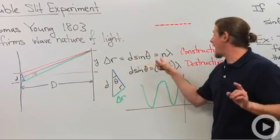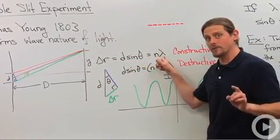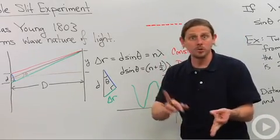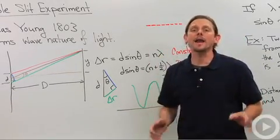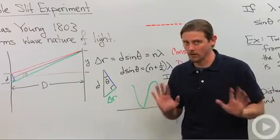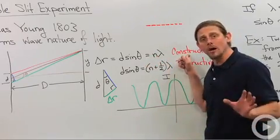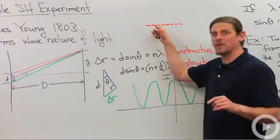So, d sine theta equals an integral number of wavelengths. So that's n equals 1, n equals 2, n equals 3, 4, 5, not n equals 2.7. So an integral number of wavelengths, then I get constructive interference and that's what gives me one of these bright bands.